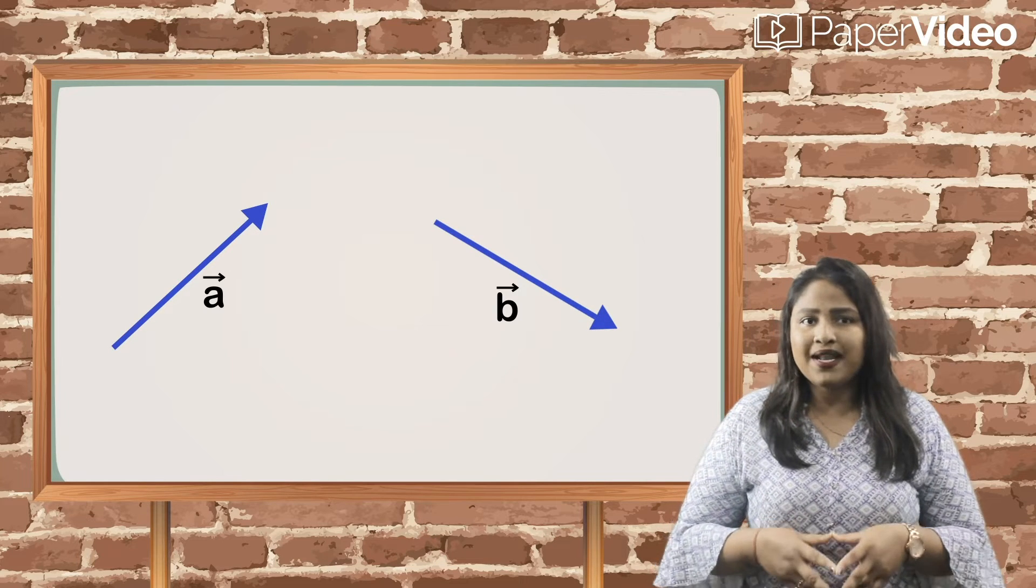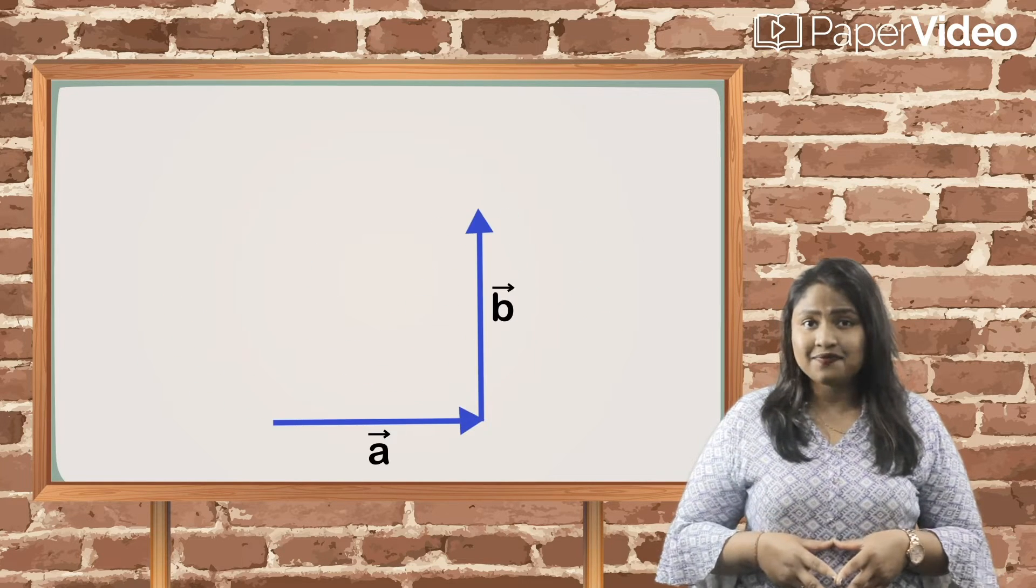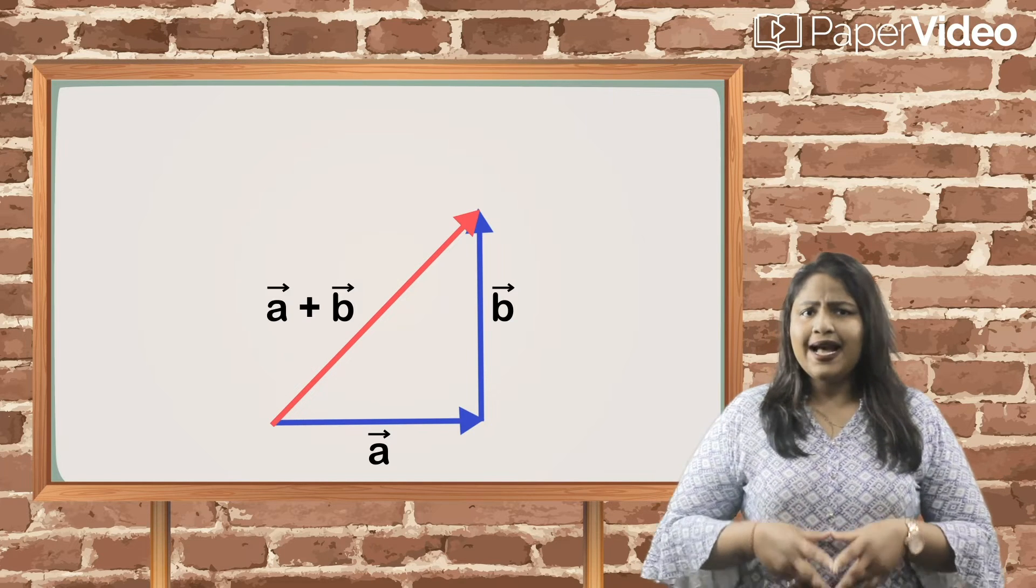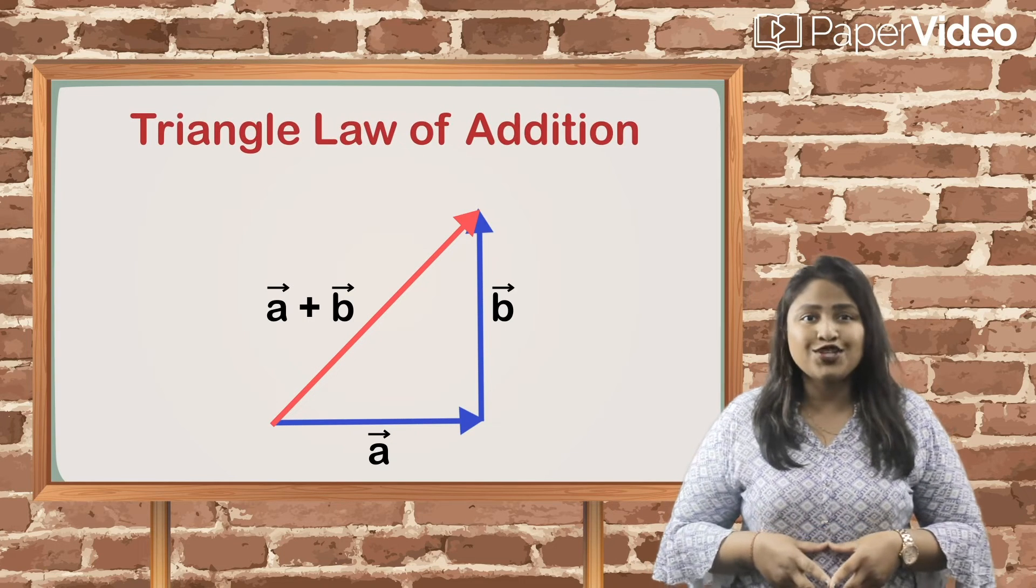Then we can add them by placing the vector like this and then drawing the third side to form a triangle. This property is known as triangle law of addition.